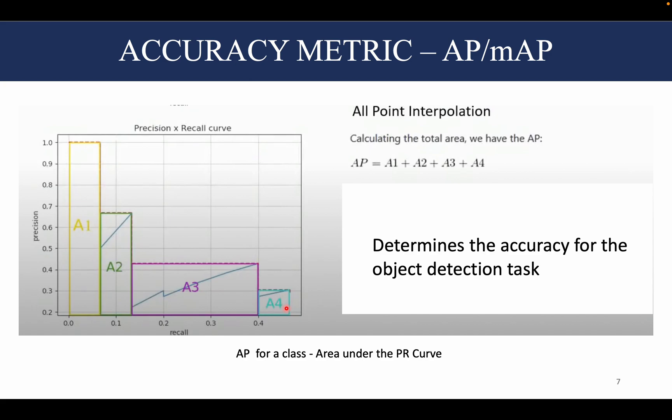And if we talk about mean average precision, it's the mean of all the average precisions for all the classes in the dataset. So the average precision depends upon precision and recall, and this in turn depends upon how much your ground truth bounding box overlaps with your predicted bounding box. This is called the IoU, which we will be seeing subsequently.